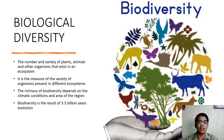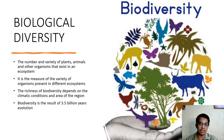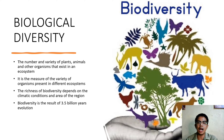It is the measure of the variety of organisms present in different regions. The richness of biodiversity depends on the climatic conditions and area of the region. Biodiversity is the result of 3.5 billion years of evolution. If you watch the movie or documentary 'How the Earth Was Made,' you will see how organisms evolved from single-cell organisms called cyanobacteria to two-legged mammals called humans.